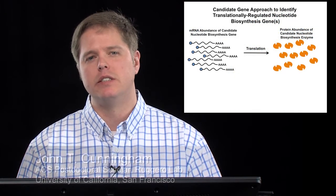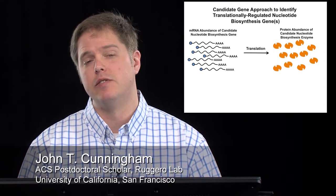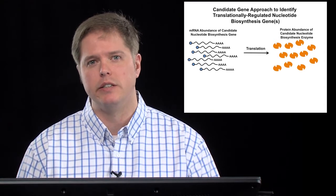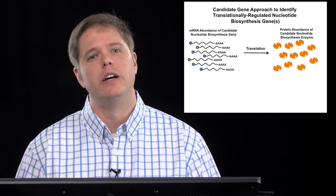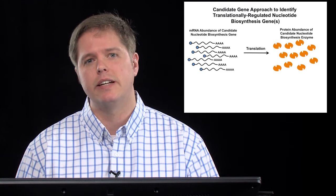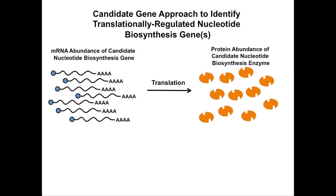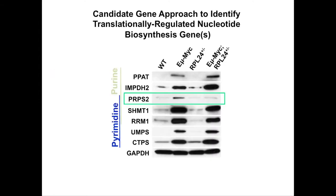Because nucleotide metabolism and protein synthesis were intimately linked downstream of oncogenic activation of MYC, we hypothesized that a particular gene or genes may be regulated at the translational level, providing the link connecting these two fundamental cellular processes. We therefore conducted a candidate gene approach to identify the putative translationally regulated gene downstream of MYC, measuring mRNA abundance and protein abundance of key regulators of the nucleotide biosynthesis pathway. Strikingly, we found that only one enzyme, PRPS2, was regulated in response to MYC at increased levels, and those levels were restored back to normal when protein synthesis downstream of MYC was restored.